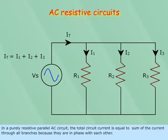In a purely resistive parallel AC circuit, the total circuit current is equal to sum of the current through all branches because they are in phase with each other.